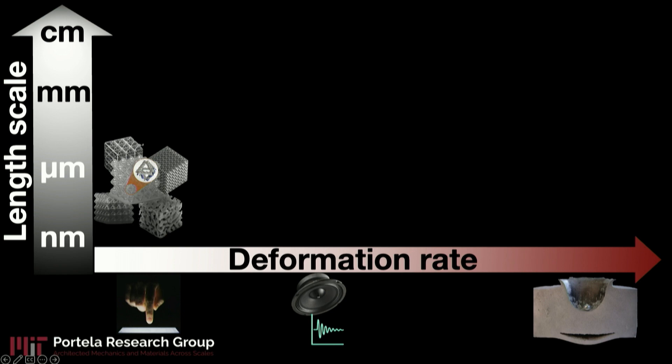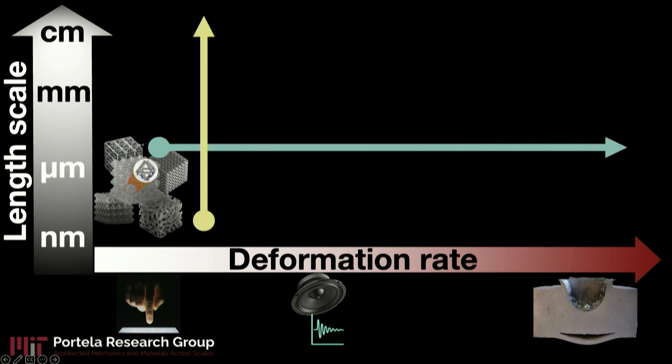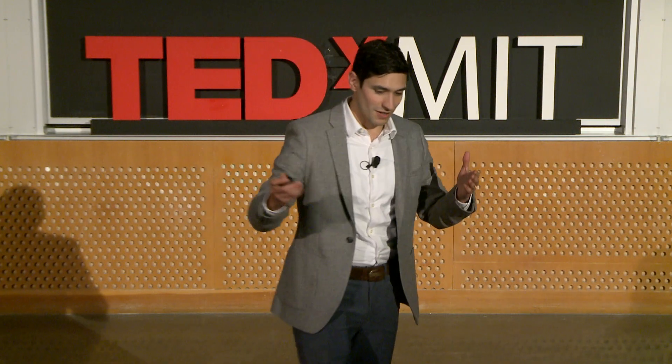So in my lab, there's two main directions that we're going in. First one is how are we going to scale up the fabrication of these materials? How can we take these nanoscale features but eventually give you a nanomaterial that you can hold in your hands? The second aspect is how are we going to characterize these materials across these dynamic regimes? How can we understand their properties upon impact and whatnot?